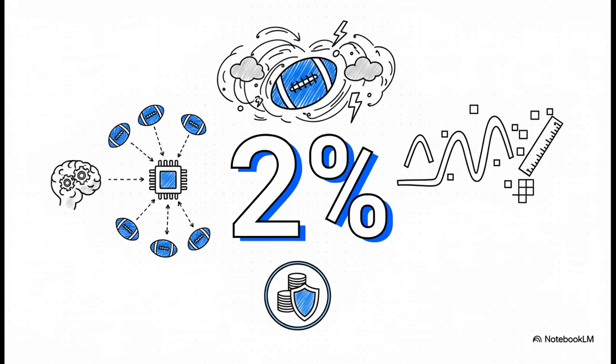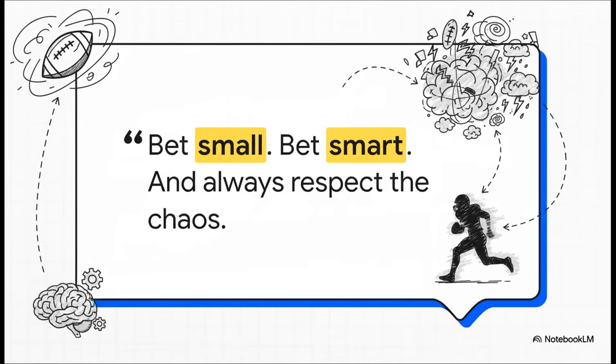The real key is managing your exposure to that risk. A really common principle is to never risk more than a tiny fraction, let's say 2%, on any single prediction. This is the safeguard, the one thing that protects you from the randomness that no AI can ever completely erase. And that really is the ultimate takeaway, isn't it? The models can give us an edge, a little peek into the patterns that are hiding inside all that noise. But to truly understand football, especially at this level, means you can never forget the most important variable of all. You have to respect the chaos.